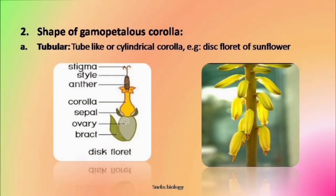Now we will talk about different forms of gamopetalous corolla. The first one is tubular corolla — here the petals are fused to form a tube-like structure. These petals are fused to form a narrow tube-like structure. This type of corolla is seen in the disc floret of sunflower.